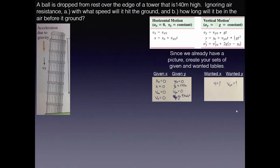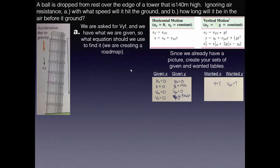Note that time t in the horizontal equations is the same t as in the vertical equations, so you can place it between both lists of wanteds. For part (a), we're finding vyf — the final speed as it hits the ground. Based on what's given, we need to figure out the roadmap: which equations to use. Since we don't know time, we're limited to the third vertical equation — the time-independent one.